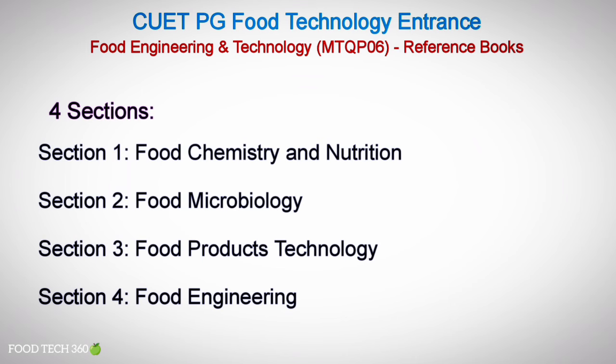As we discussed before, there are four sections in the syllabus. Section 1 is Food Chemistry and Nutrition. Section 2 is Food Microbiology. Section 3 is Food Products Technology. Section 4 is Food Engineering.